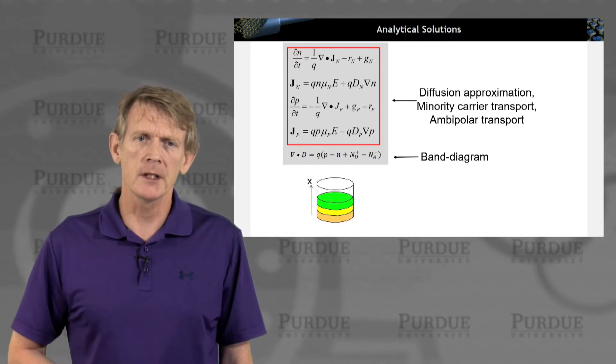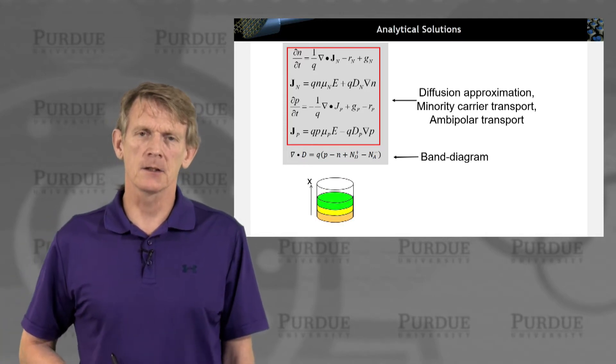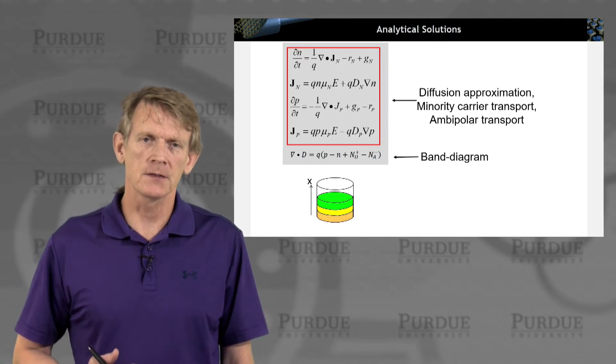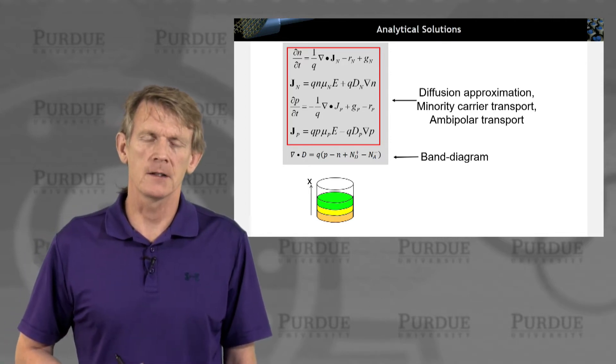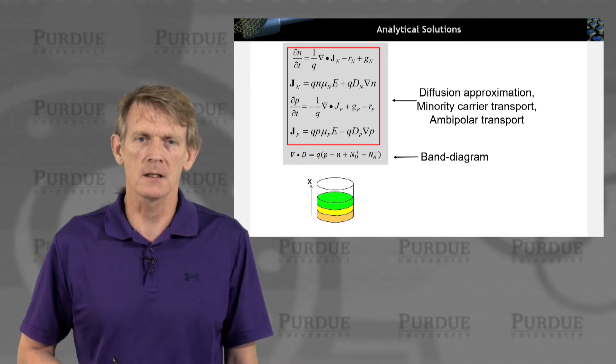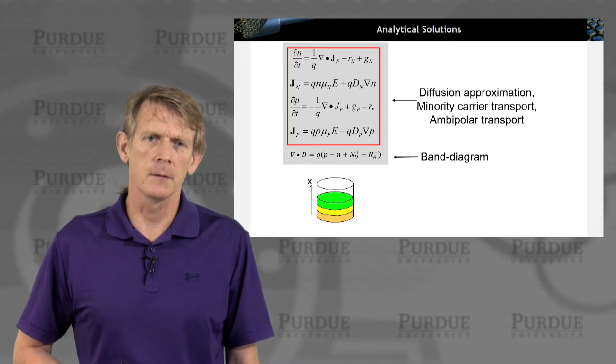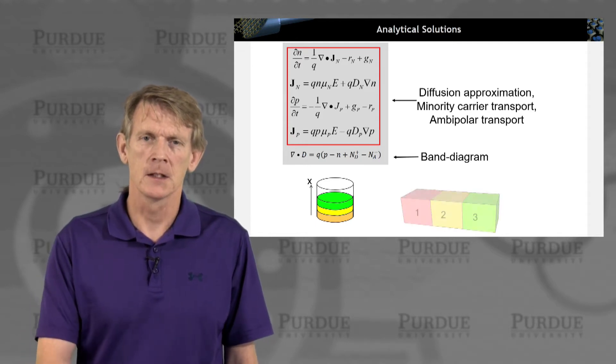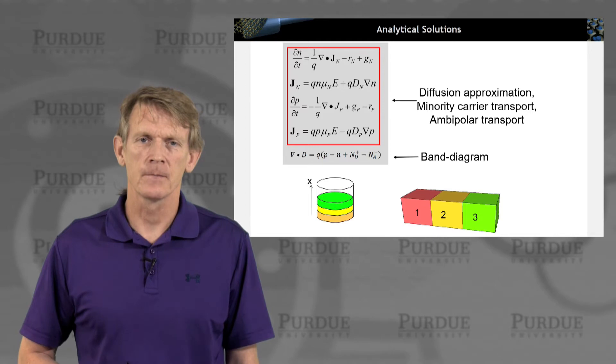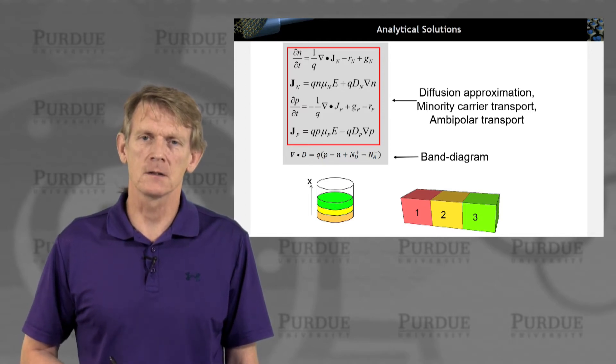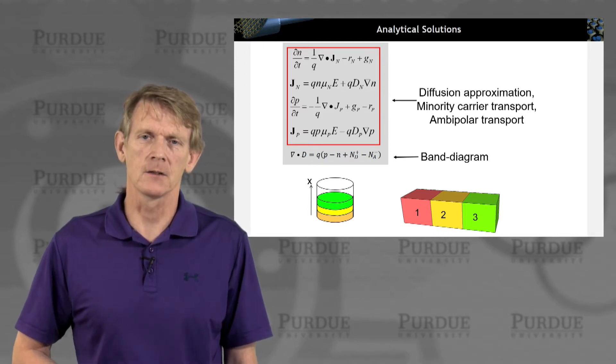All right, so when we pursue an analytical solution, we have to divide our system, typically, into regions in which we consider some homogeneous type behavior. So here, imagine you have a slab of some material where we divide it into a one-dimensional system. We'll turn this sideways and divide these three regions that will carry some analytical solutions through.